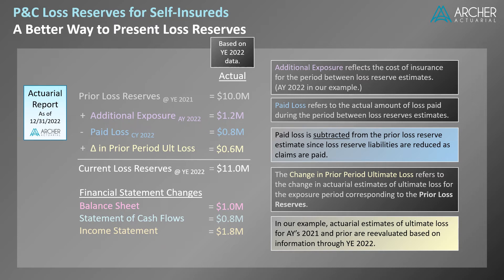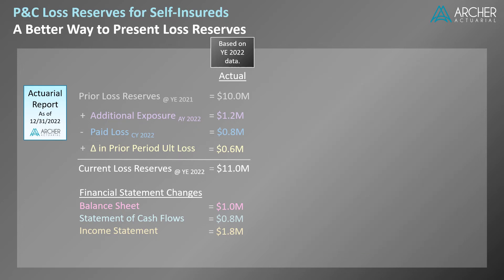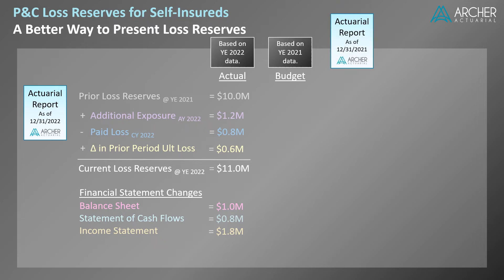However, we are still missing something important: a comparison to budgeted amounts. Budgeted amounts need to be determined at the time of the prior loss reserve analysis. In our example, these amounts would be obtained from the prior actuarial report as of year-end 2021. Let's review each item.